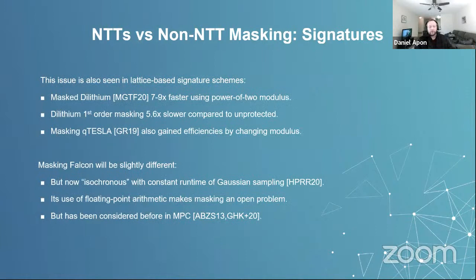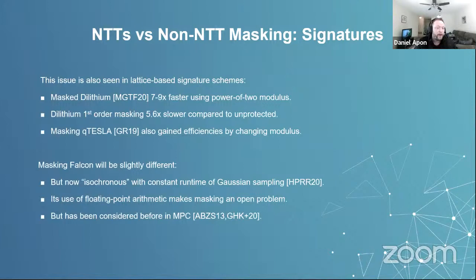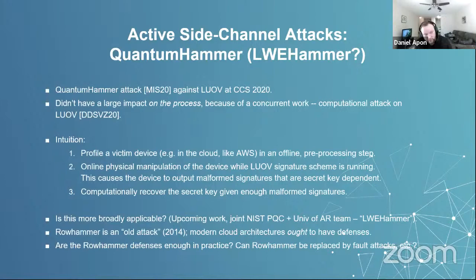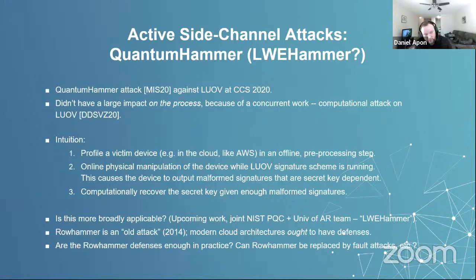For signatures, masking floating-point arithmetic is a major open problem for Falcon. Finally, regarding active side channels, there is the Rowhammer attack against LUOV at CCS 2020. This didn't have a major impact on our process because there was a concurrent computational attack against LUOV, but you might ask whether such active side-channel attacks are more broadly applicable against NIST PQC third-round finalists. There is upcoming work from a joint team with NIST PQC members and the University of Arkansas that will attempt to do this against LWE KEMs.